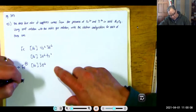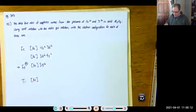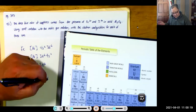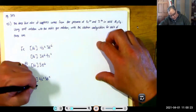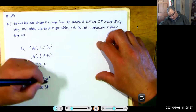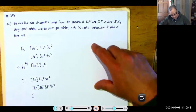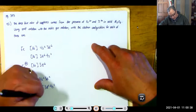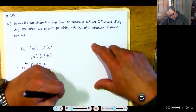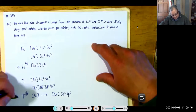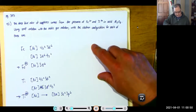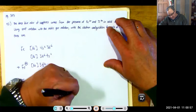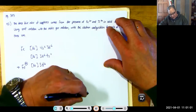For titanium: neutral titanium is [Ar] 3D2, 4S2. Titanium 4+ removes all four outer electrons, giving just [Ar], which should properly be written as [Ne] 3S2, 3P6. For magnetism: titanium 4+ is diamagnetic (all subshells full, all electrons paired); iron 2+ with 3D6 configuration is paramagnetic.